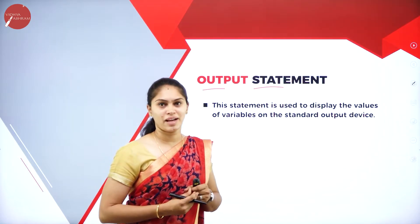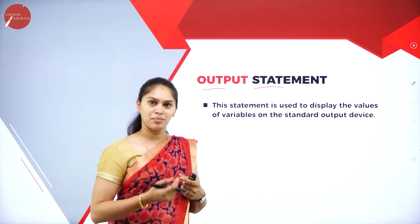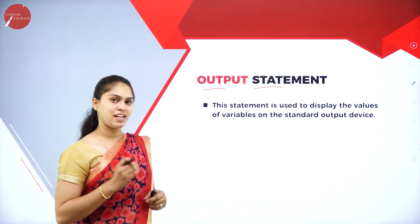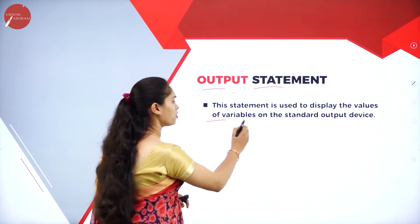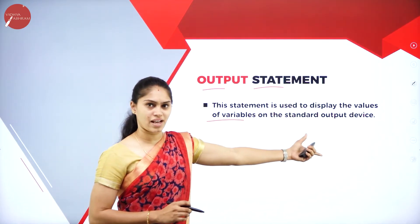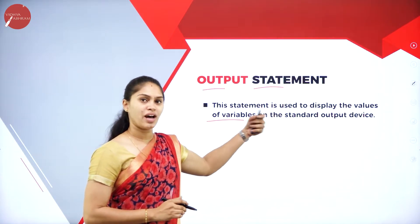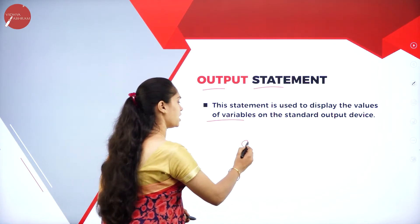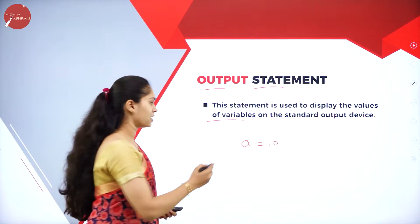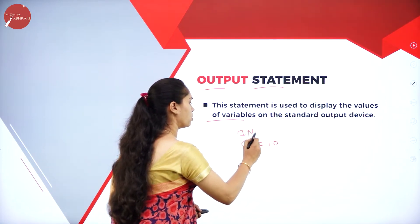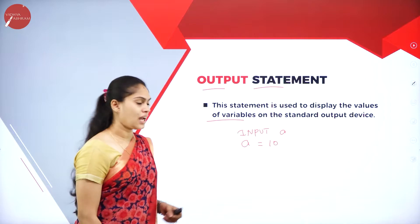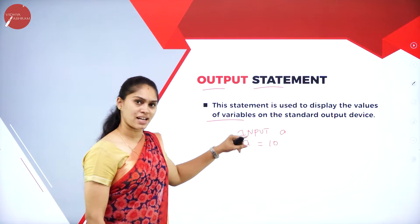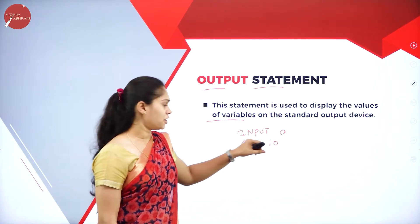When studying any selection construct, understand its definition and alternative names, its general syntax, its flowchart, and one or more examples. The simple if statement helps decide execution of a particular statement based on a condition. Simple if is also called one-way branching — if the condition is true, a single path is followed; otherwise control moves to the next statements.